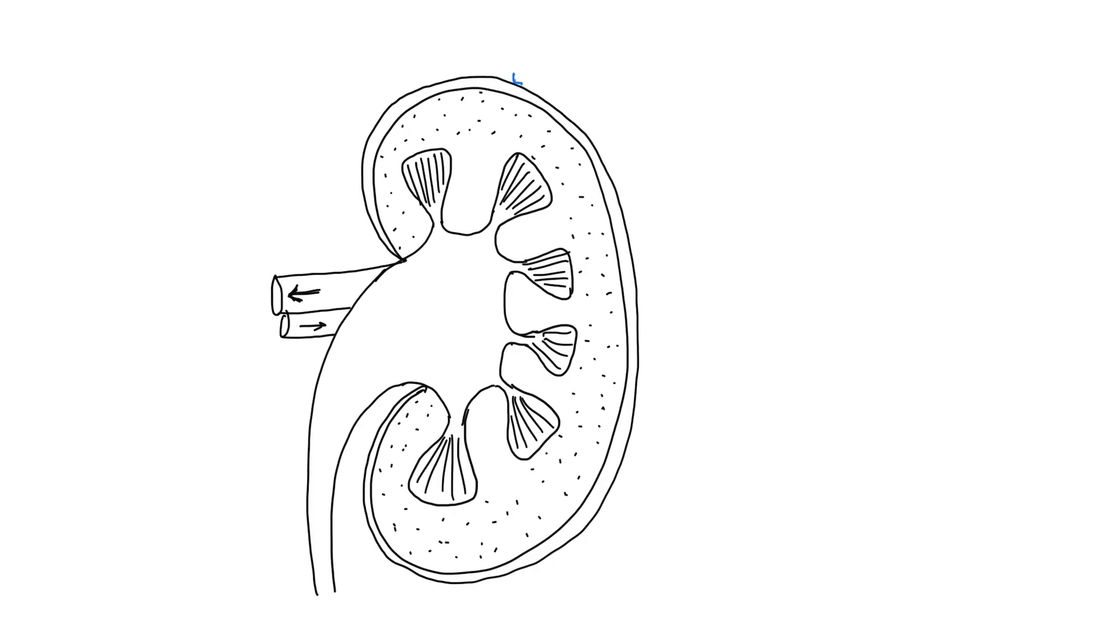Let's label the diagram. The outer membrane is the capsule and the dotted part at the periphery is the renal cortex.